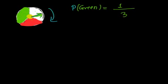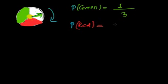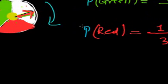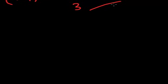Another question: what is the probability of stopping the pointer at the red section? The pointer may stop at red or white as well. The total equal parts in the spinner are 3, and red takes 1 part, so the probability of stopping at red is 1/3. This is how we deal with probability, and there are lots more examples related to this.